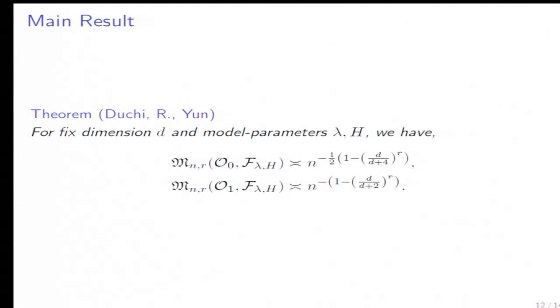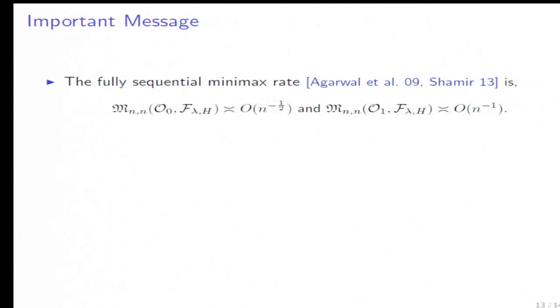Here I present the main result. For any fixed dimension d and fixed model parameters lambda and H, we can evaluate the minimax risk up to constants dependent on d, lambda, and H. What's non-trivial is the exponent in these bounds. To better interpret this result, let me give two important remarks. First, we want to understand how minimax risk depends on dimension d. As we can see, to achieve epsilon accuracy, the sample size needed is exponential in 1 over epsilon, meaning it's exponentially bad in the dimension.